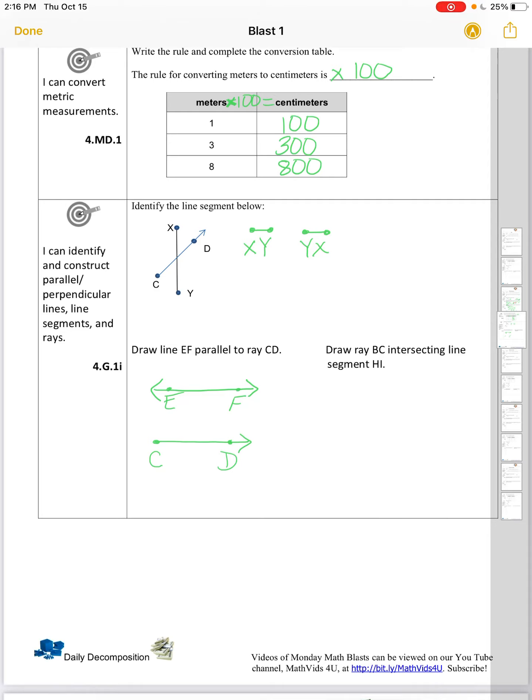Draw ray B, H, intersecting line segment H, I. So again, a ray is going to have an arrow and an endpoint. We start with the endpoint, we move in the direction of the arrow. We're going to call that B, C.